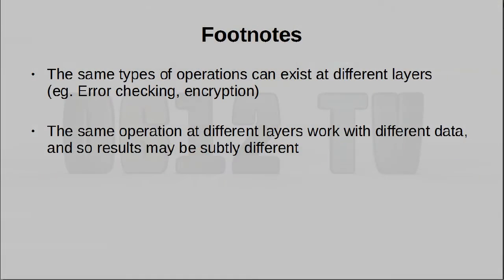Those were the seven layers of the OSI model. There are a few things to take note of. Firstly, certain responsibilities can actually exist at different layers. For example, as low as layer two, we could already have error checking with checksums, and yet certain protocols at layer four could also do the same thing. Operations aren't always limited to a particular layer — the same kind of operation can exist at different layers, and perhaps their roles are slightly different even though the end result is similar. Since the nature of the data changes subtly as we move from one layer to another, an operation at a higher level may not be exactly the same as an operation at the lower level.